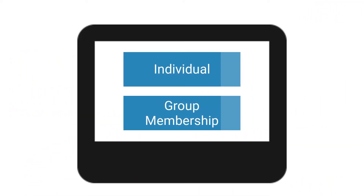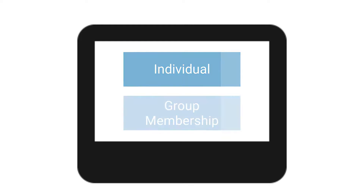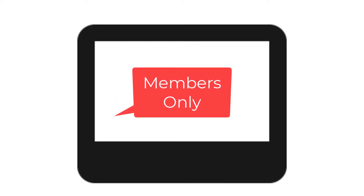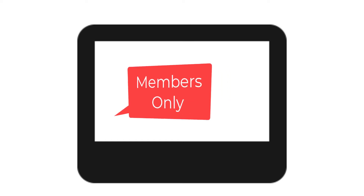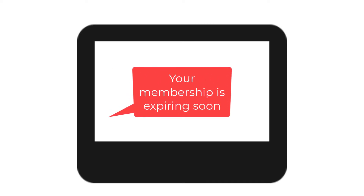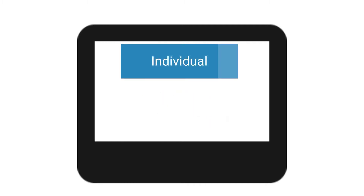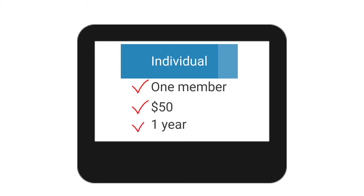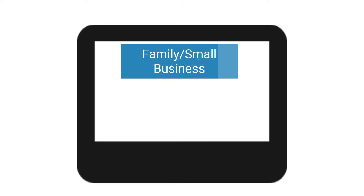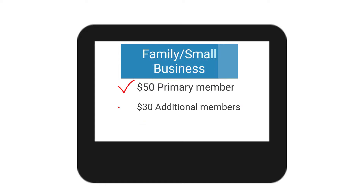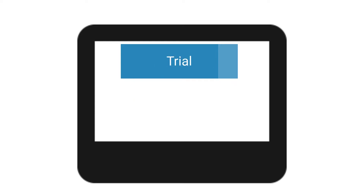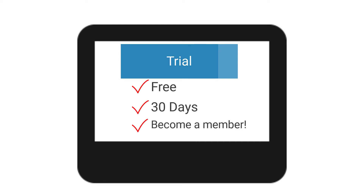Setting up member types is easy with Club Express. Your membership types are used to determine who has access to certain content on your website, how long their membership lasts, and their renewal terms. Some of the membership types you might use include an individual membership, which costs $50 and lasts one year; a family or small business membership with the option to add multiple people for an additional fee; or a trial membership, which is free, lasts for 30 days, and has the option to upgrade.